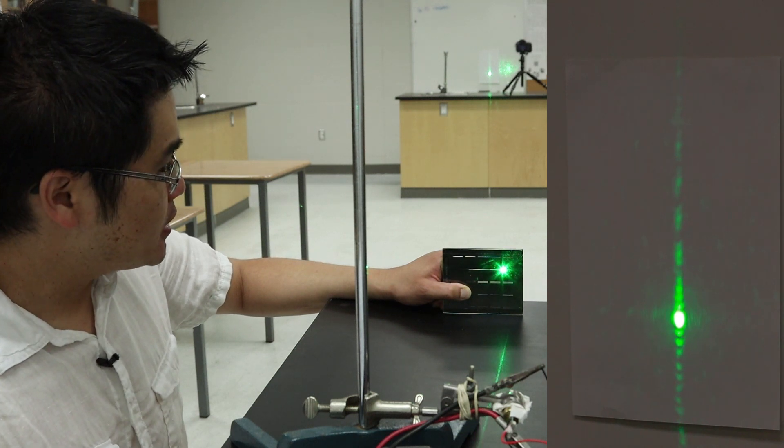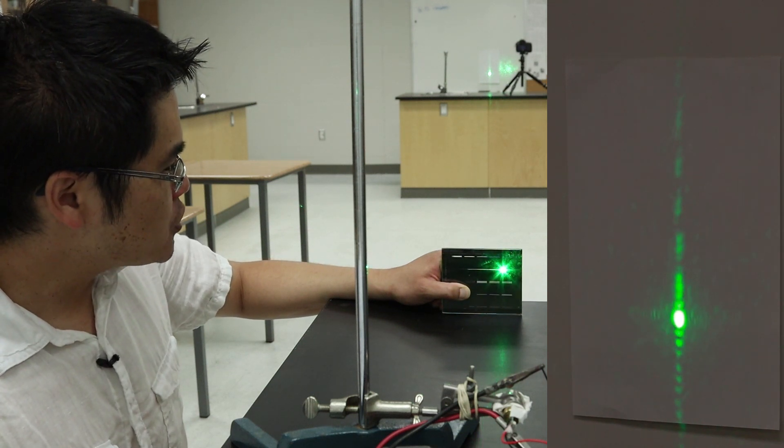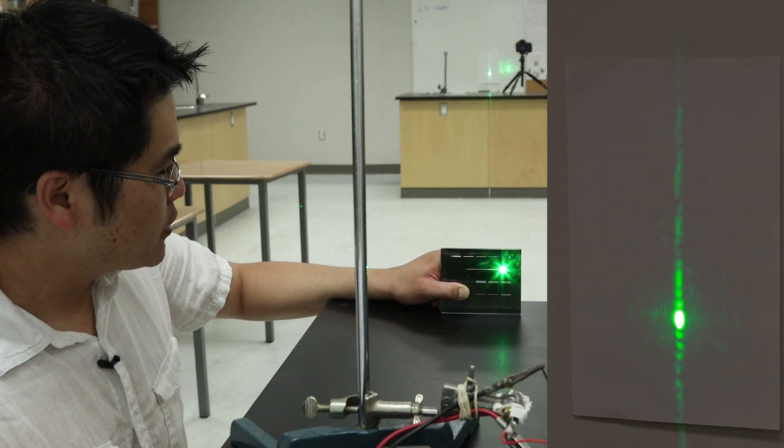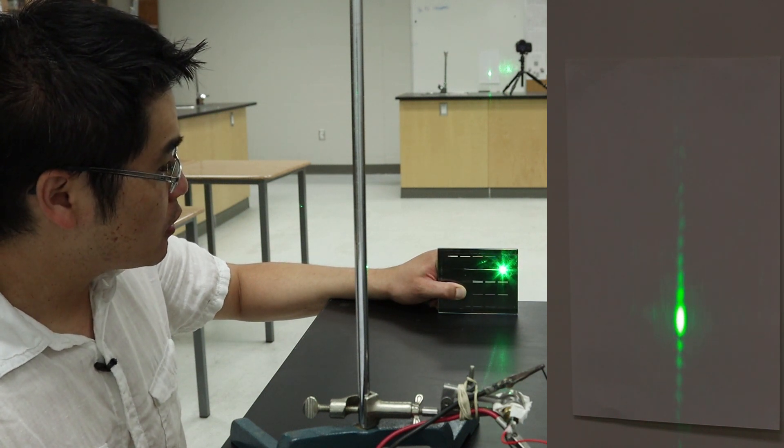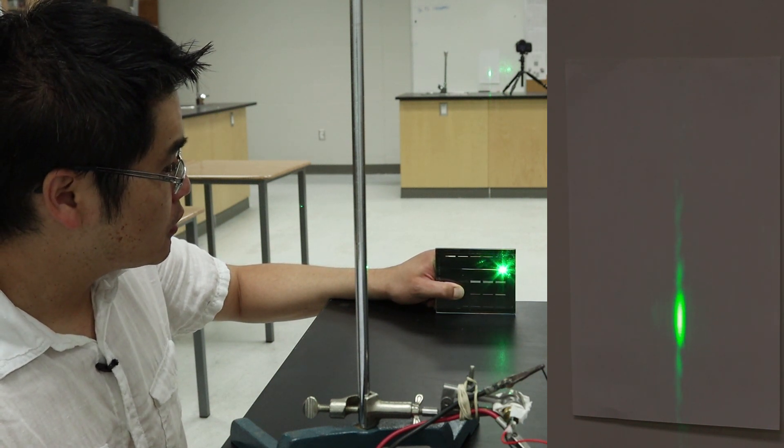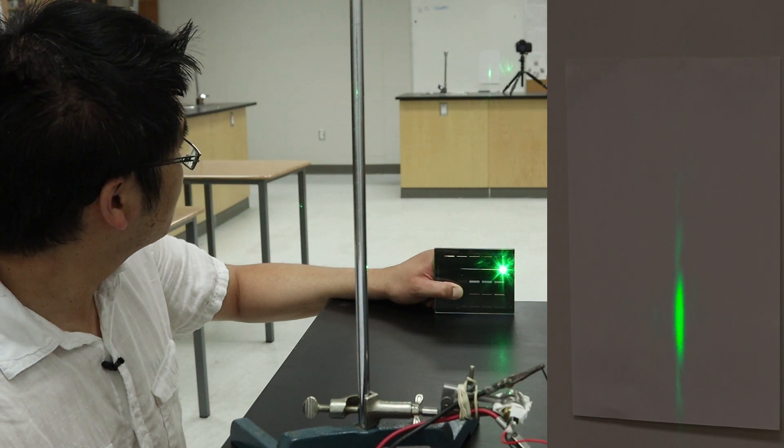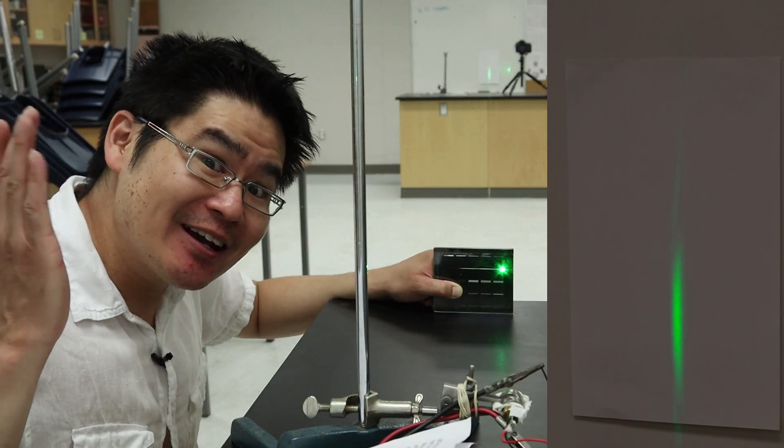you can see that the intensity of light does decrease. However, strangely enough, the dot also gets taller and taller and taller. Why is that?